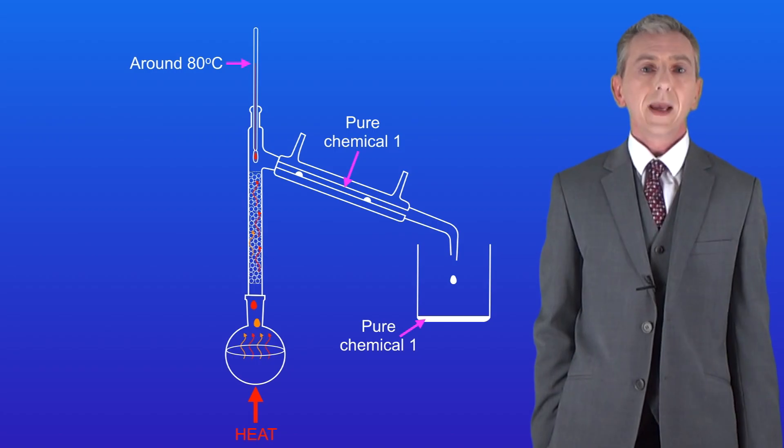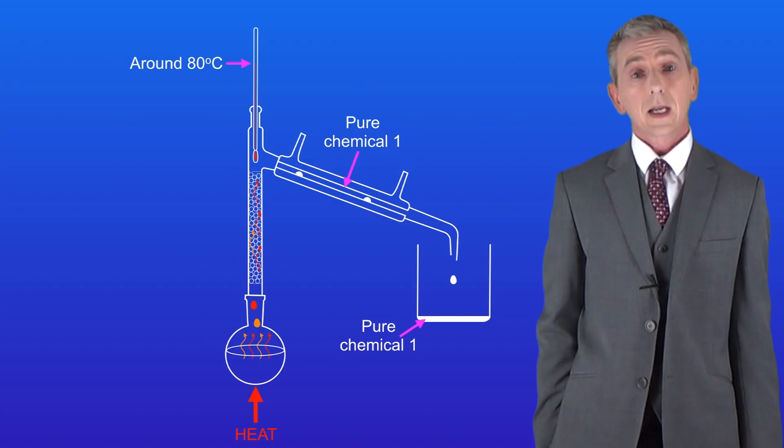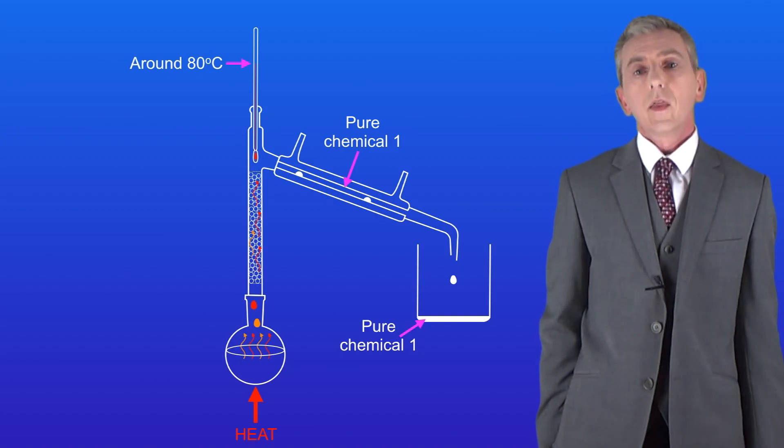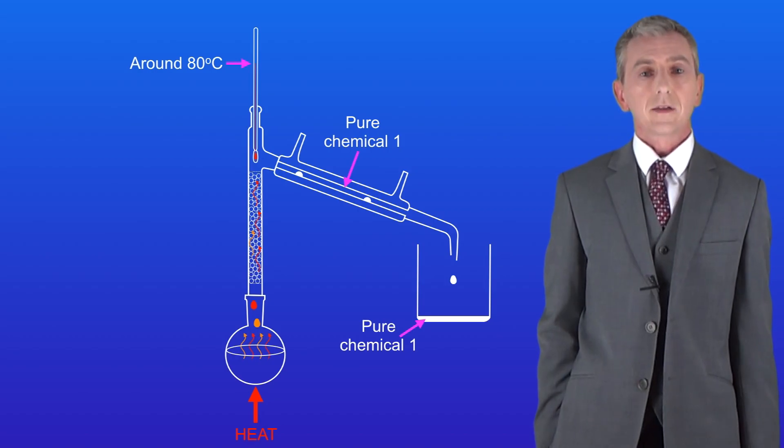At this point we've got mainly one chemical passing into the condenser. So this condenses and we can collect it in a fresh beaker. This is our first proper fraction, in other words the chemical that boils at 80 degrees Celsius.